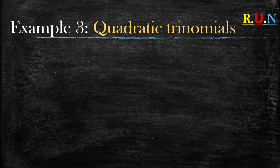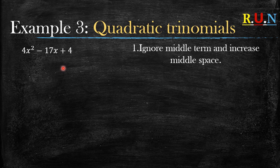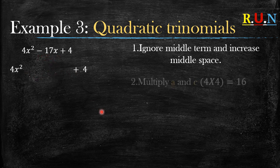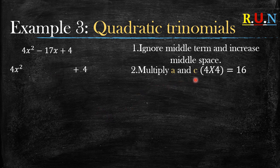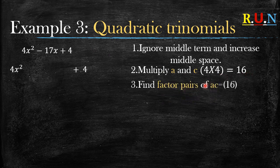Example number three: what do you do when given something like this and told to factorize? Rule number one: ignore the middle term — which is negative 17x — and increase the middle space. Rule two: multiply a and c. Our a is 4 and our c is 4, so 4 multiplied by 4 gives us 16.